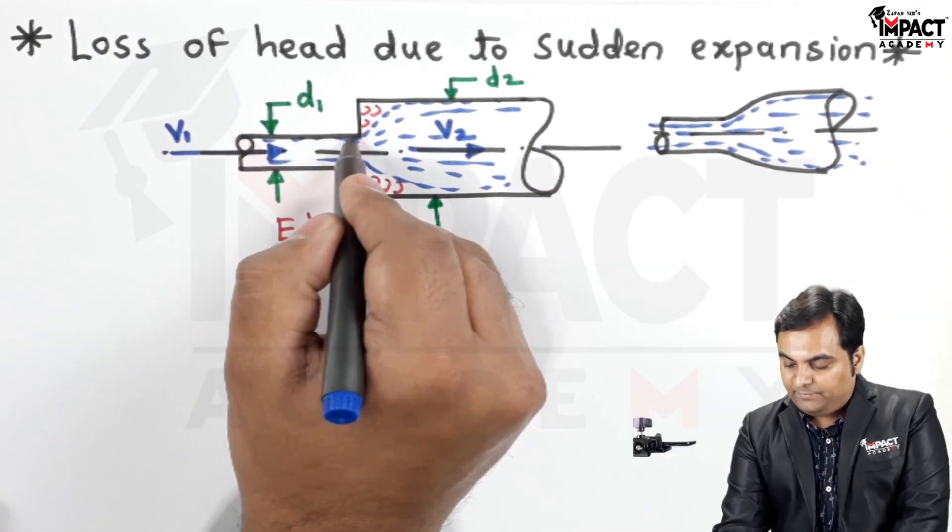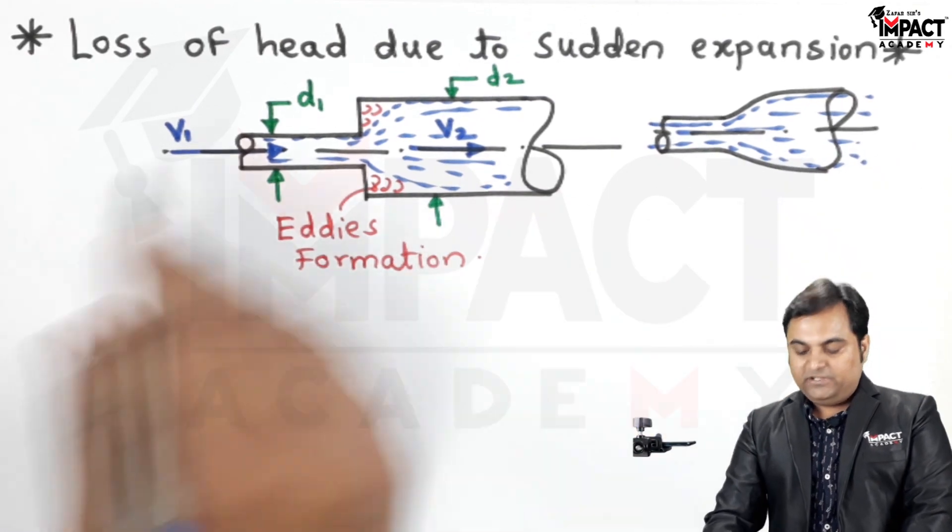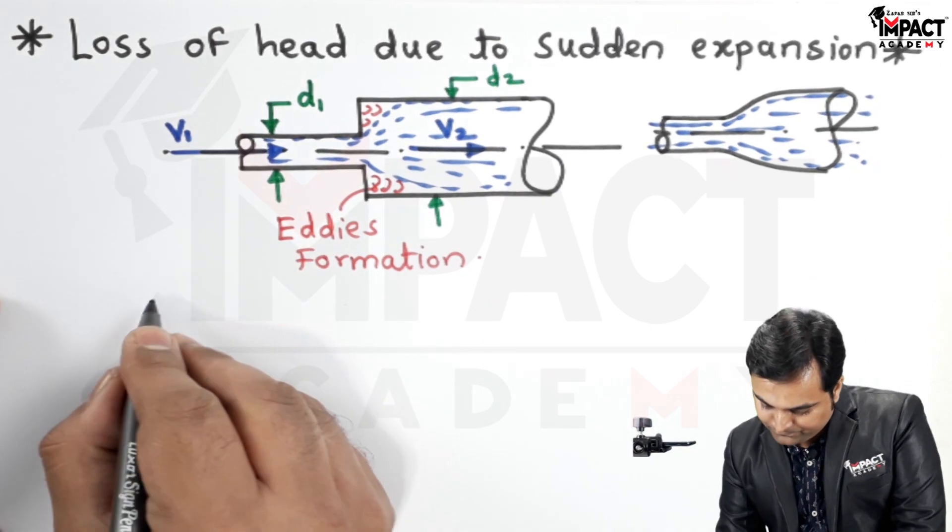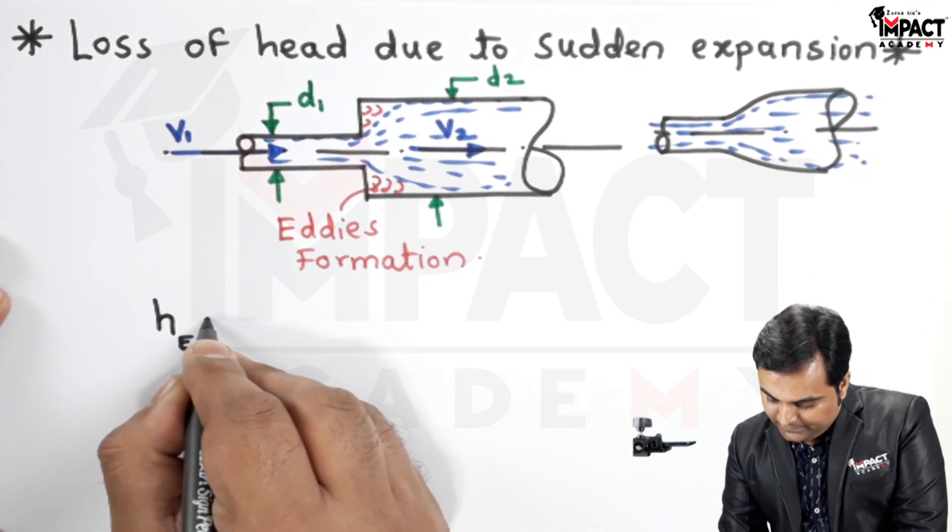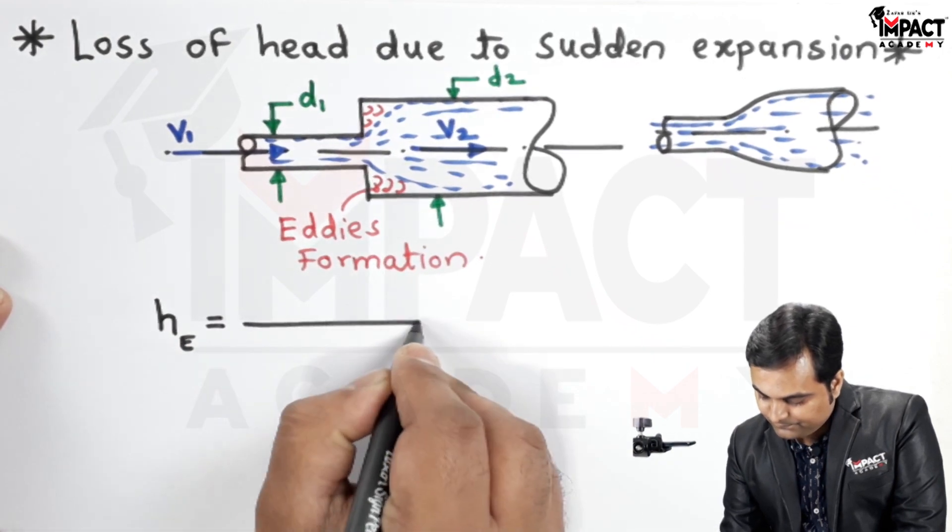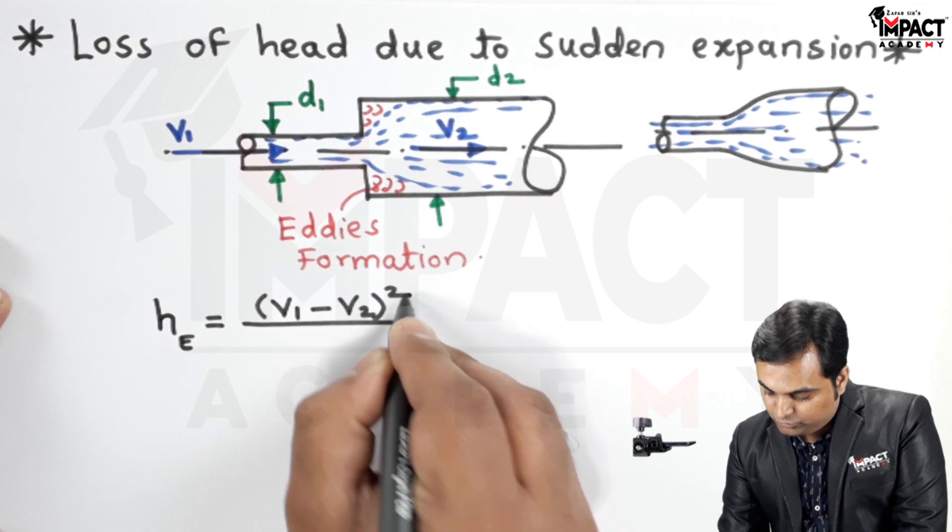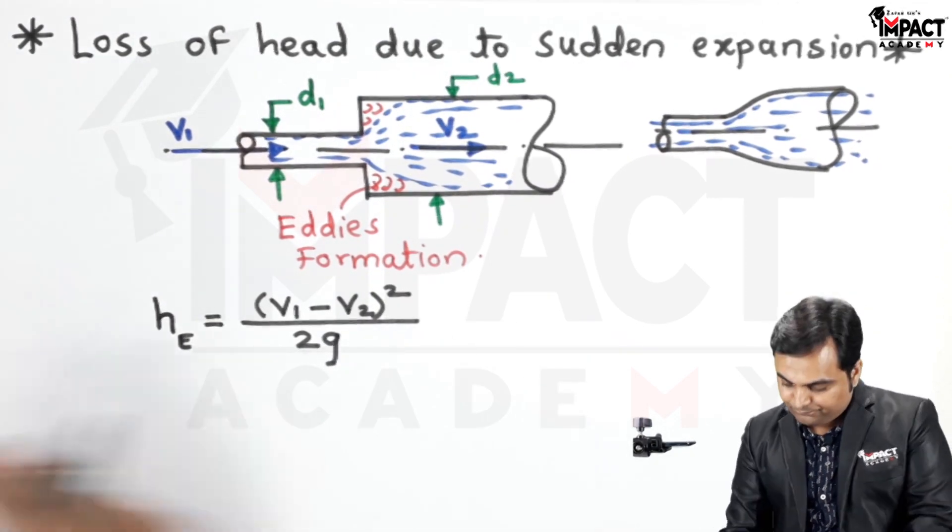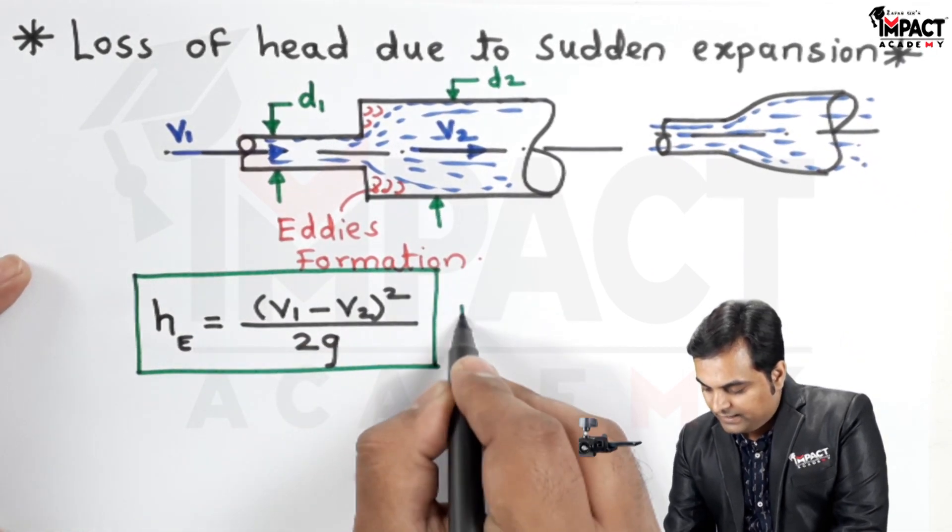But since here the diameter is increased suddenly and not gradually, there will be loss due to sudden expansion. The formula is given by H subscript E equals V1 minus V2 whole square upon 2g, and the unit will be in terms of meters.